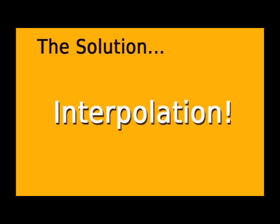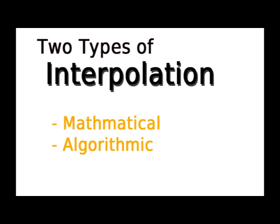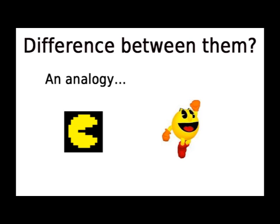For an overview of the technology: there are two different types of interpolation — mathematical and algorithmic. Mathematical uses simple mathematical formulas to make images bigger or smaller. Algorithmic uses more complex, usually proprietary formulas and other techniques to make the converted image look better. Think of it as more advanced software — like comparing the original Pac-Man to the newest Pac-Man. They both do the same thing, but one just looks better and does the job with more features.